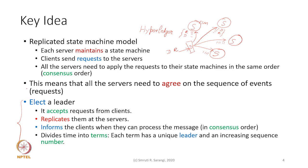The idea in Raft is that we first elect a leader. The leader then accepts requests from clients, replicates them at the servers, and informs the servers when they can process the messages in consensus order, such that all of them see the same set of messages in the same order. Time is divided into terms: a leader maintains its leadership for a period, and if the leader crashes, we elect a new leader. Time is thus divided into what we call terms.